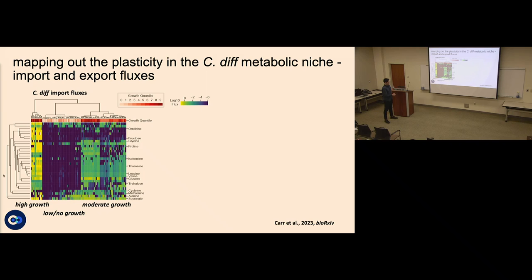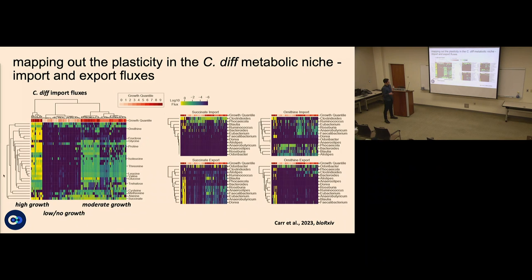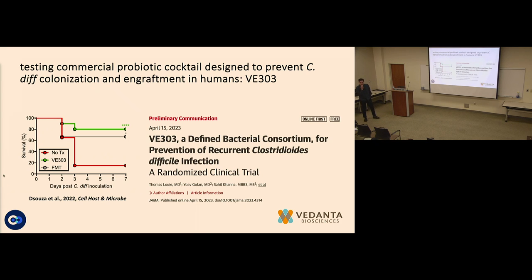The models are transparent — you can look inside and see what taxa are responsible for competing with or facilitating C. diff. For succinate, Phocaeicola vulgatus consumes a lot of succinate in samples where C. diff doesn't grow, making it a putative competitor. Many butyrate-producing Clostridia are producing succinate in samples where C. diff grows fast — likely acting as cross-feeders facilitating C. diff growth. Similar patterns emerge for ornithine.